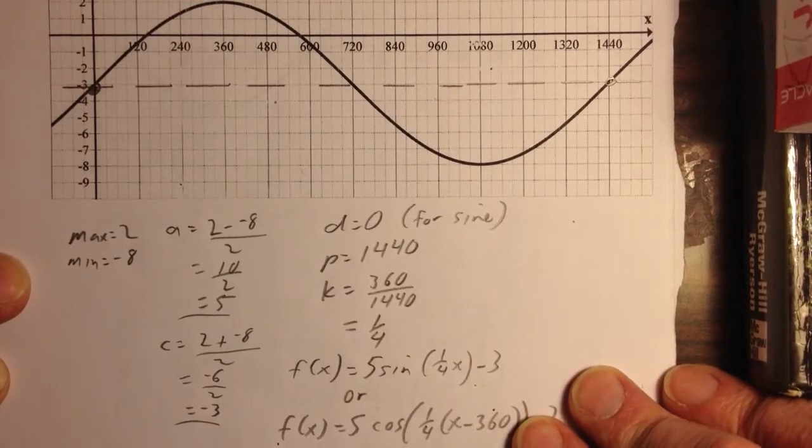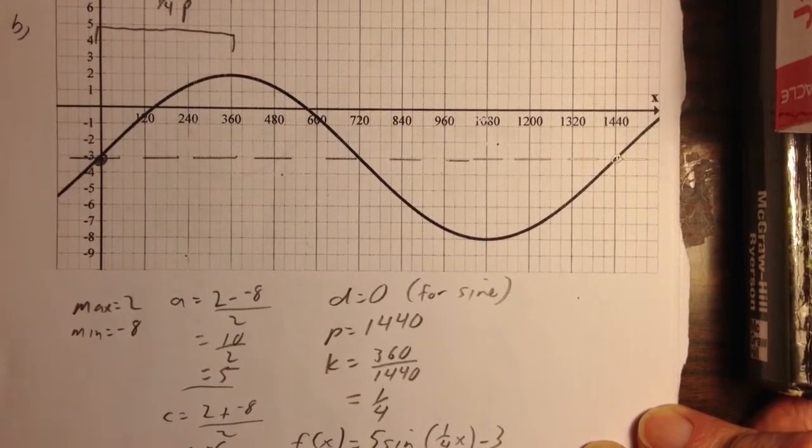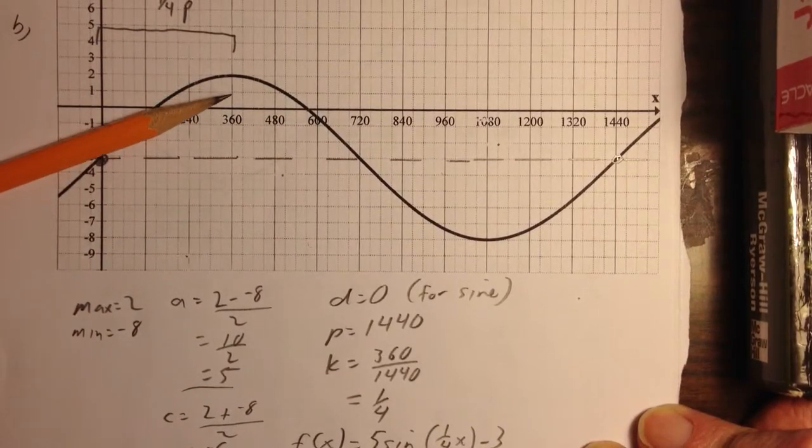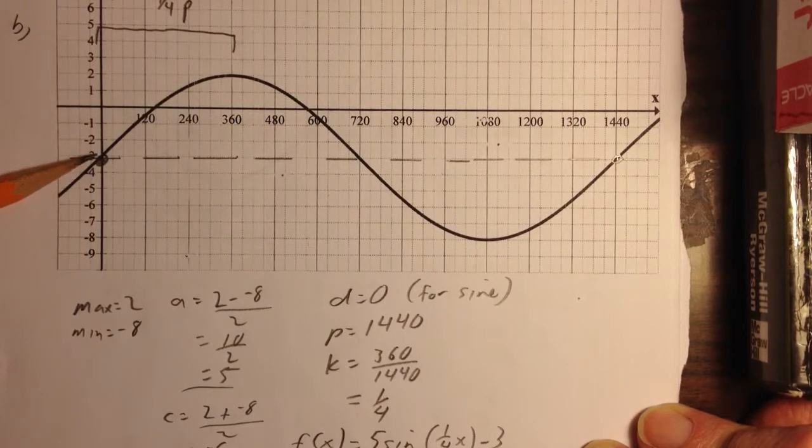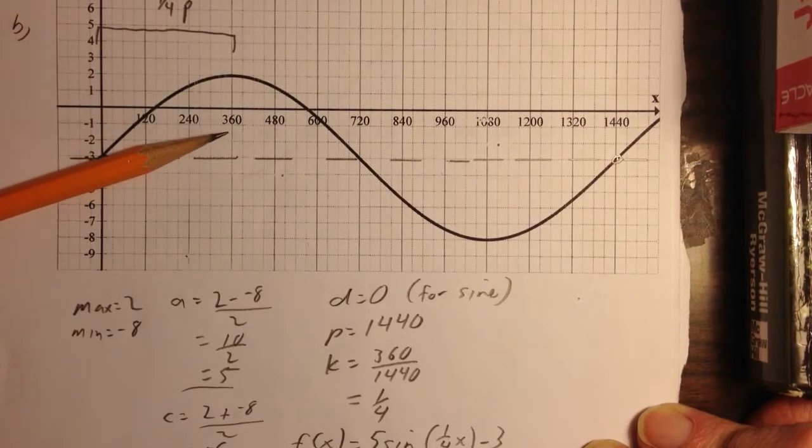If I wanted to do cosine, cosine starts at a maximum. The maximum is a quarter period to the right of where the sine starts. So, a quarter period from where the sine starts is 360 degrees.